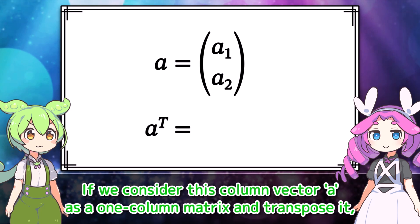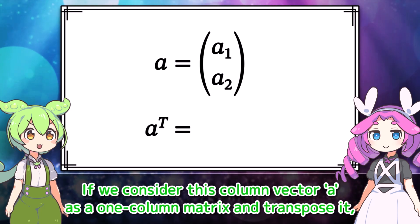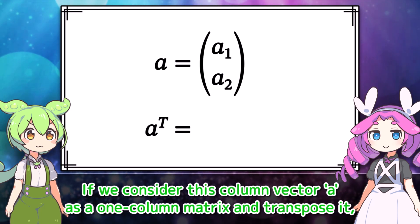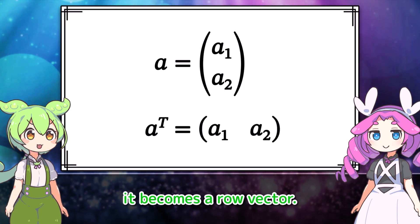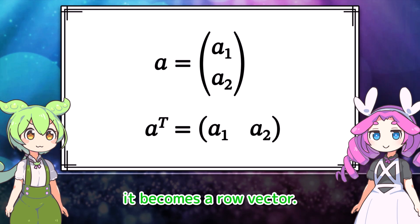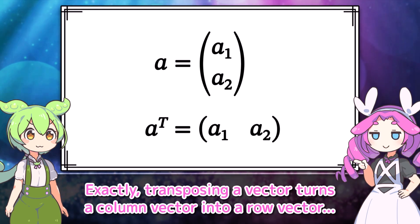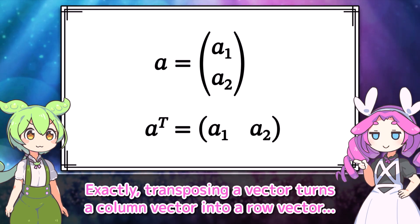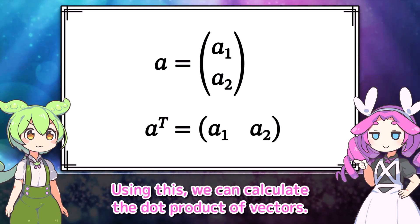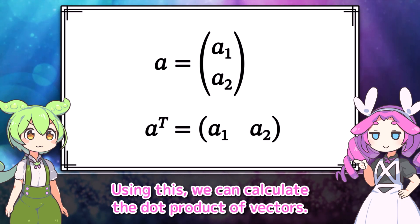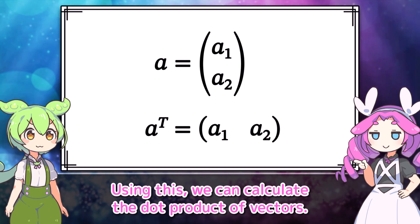Now, what about the transpose of a vector? Well, if we consider this column vector A as a one-column matrix and transpose it, it becomes a row vector. Transposing a vector turns a column vector into a row vector. Using this, we can calculate the dot product of vectors.